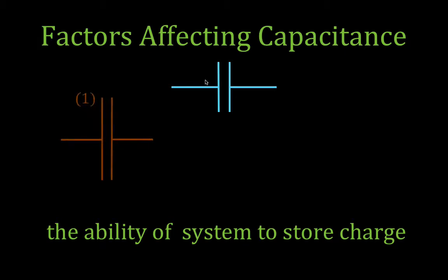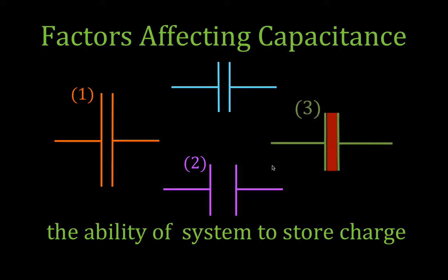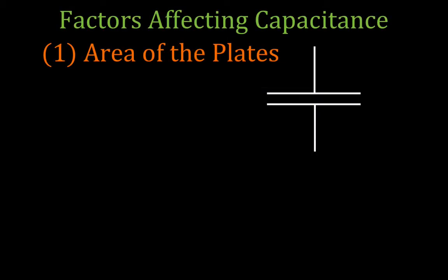Now there are three things we can do to affect the capacitance. We can change the size of the plates — say I made the plates bigger. We can change the distance the plates are separated — say I made the separation bigger. Or we can leave the separation and size the same, and we can put a dielectric, some material, between those plates. Each of those things affects the capacitance of the capacitor.